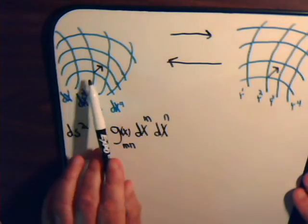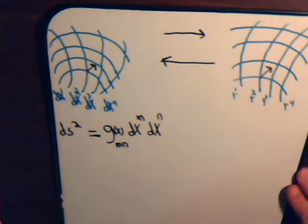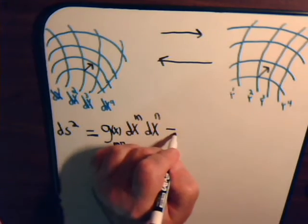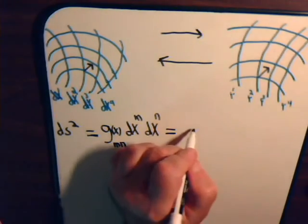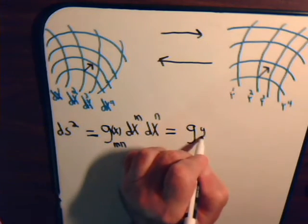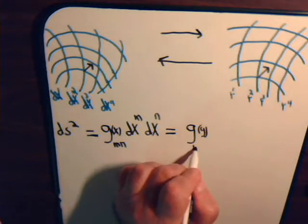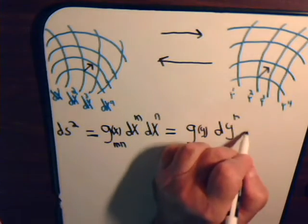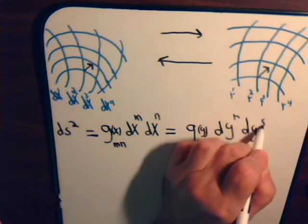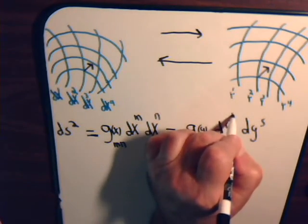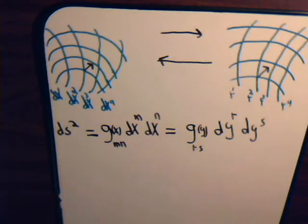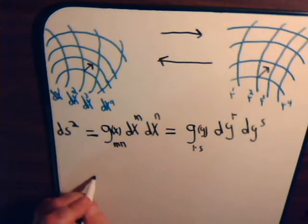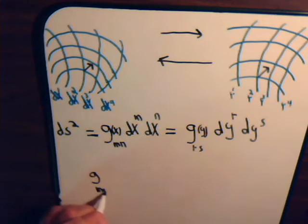Well, now, as we noted that, here, the length of this vector and the length of this vector is the same in either system. So, this would equal, writing ds squared now for the y-frame, that is g_y rs dy^r dy^s. Okay, but now, let's do what we did before. dx^m, remember, that's equal to the partial of x^m with respect to y^r dy^r.